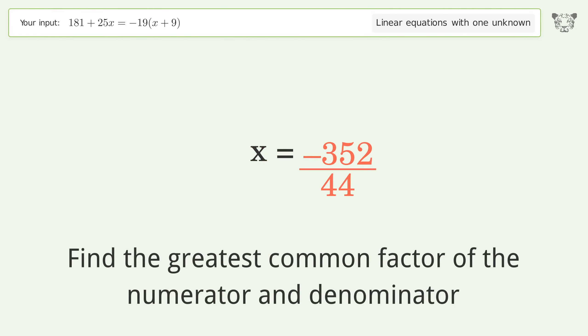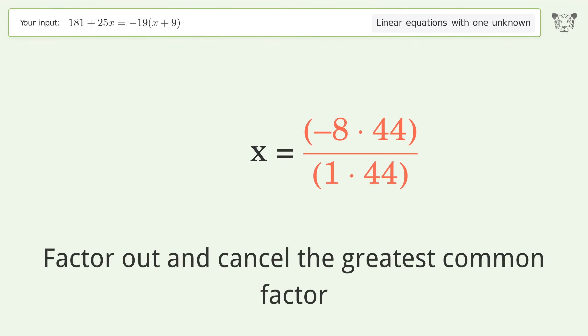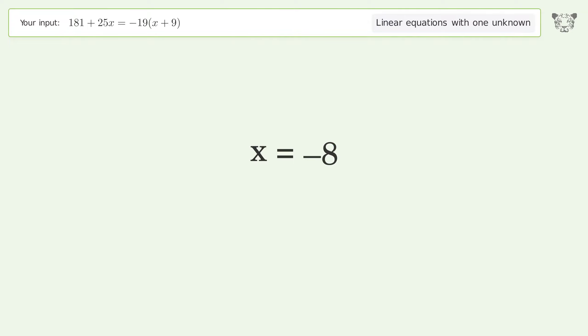Find the greatest common factor of the numerator and denominator. Factor out and cancel the greatest common factor. So the final result is x equals negative 8.